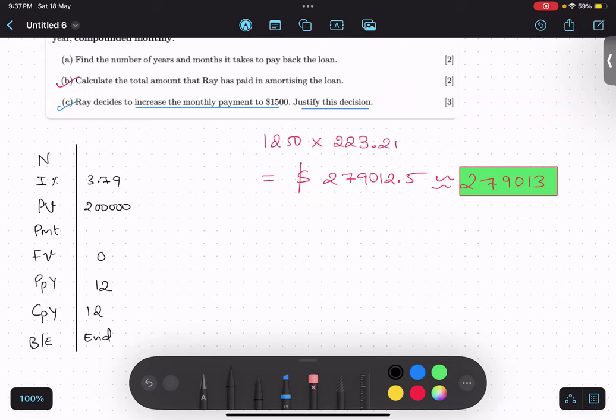So, N we have to calculate. PMT this time is minus 1500. Rest everything will remain same. Yes or no? Yes, sir. Same thing everything. Yeah. So, what is the answer you are getting? N value?